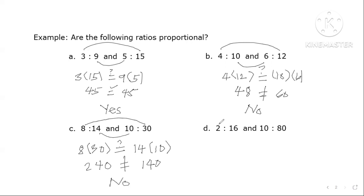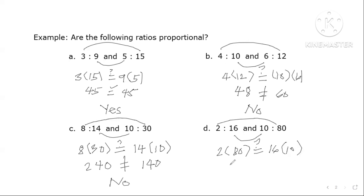Let's go to letter d. Is the product of 2 and 80 equal to the product of 16 and 10? So 2 times 80 is 160, and 16 times 10 is 160. They are equal, so the answer is yes. That's how easy it is!